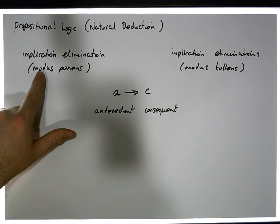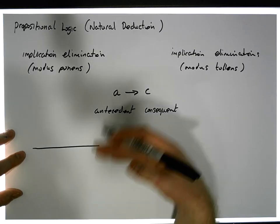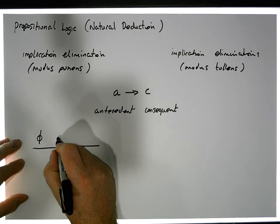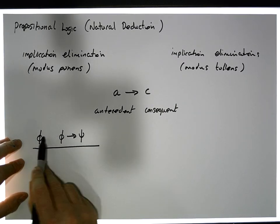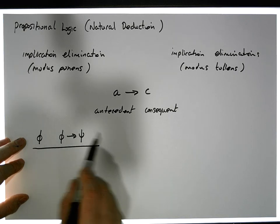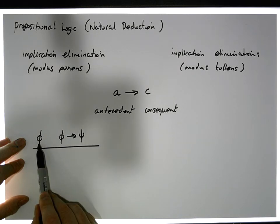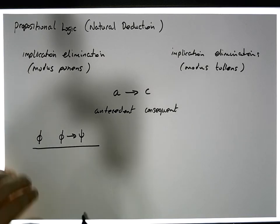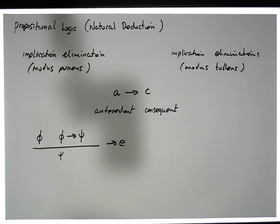The implication elimination rule for modus ponens says this: if we have in our proof the truth of φ, and if we also know the formula φ implies ψ — these could be premises or could have been deduced from other premises — well then, if we know φ holds and φ implies ψ holds, we can conclude that ψ must hold. This is implication elimination, known as modus ponens.